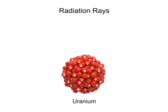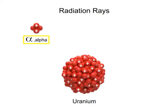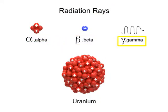The nucleus of radioactive material emits three different types of radiation rays, called alpha, beta, and gamma. Due to the distinct electrical charge characteristics of the alpha, beta, and gamma rays, they can be separated by directing a beam from a radioactive source through a magnetic field.